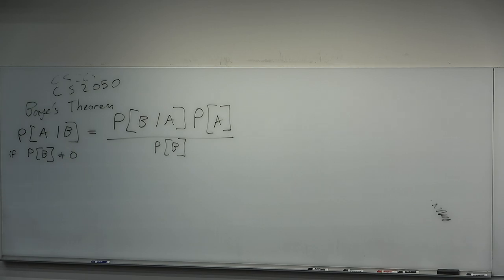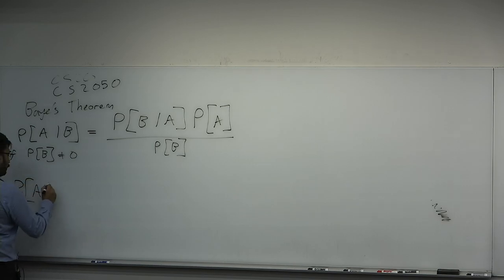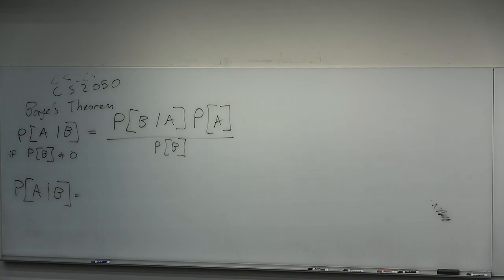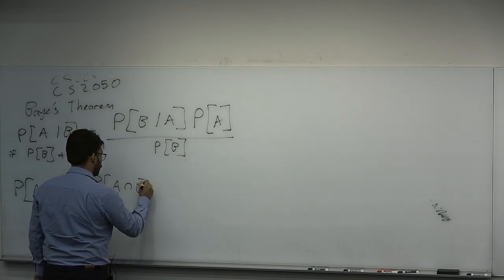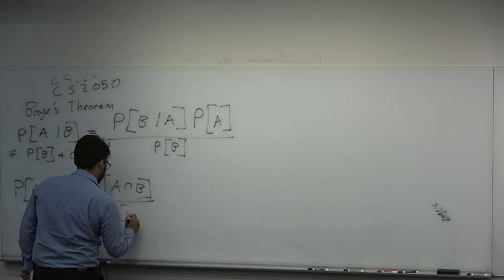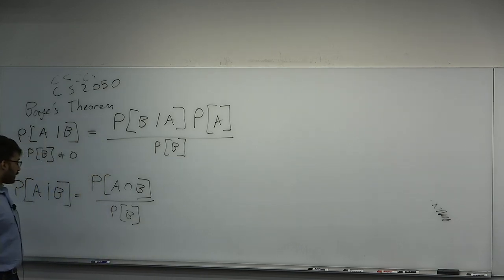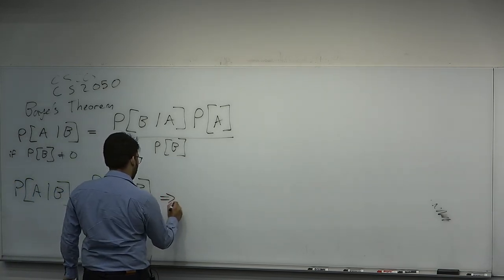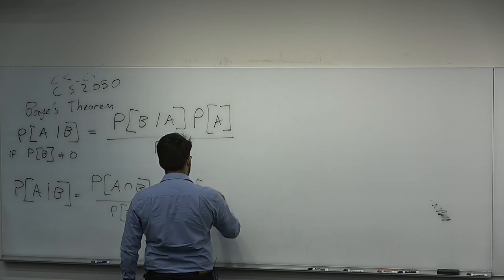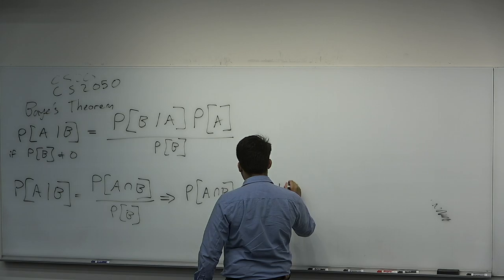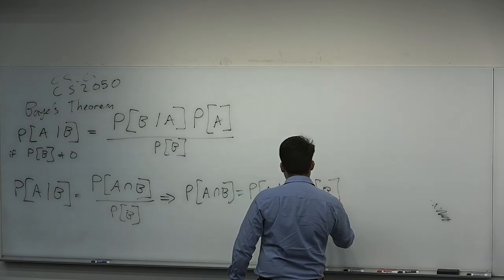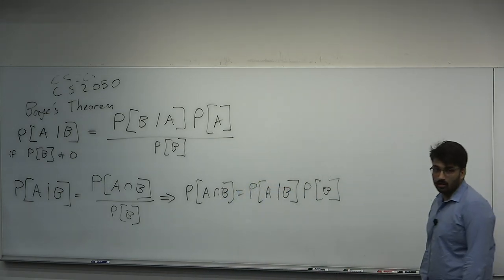Let's just prove Bayes Theorem — it's fairly simple. Does anyone remember the formula for conditional probability for any two events? The probability of A intersect B divided by the probability of B. That implies that the probability of A intersect B equals the probability of A given B times the probability of B — simply multiply both sides by this non-zero probability of B.